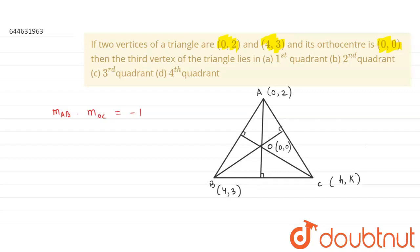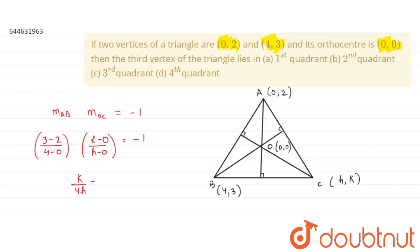Slope of AB using the formula (Y2 − Y1)/(X2 − X1) is (3 − 2)/(4 − 0). Slope of OC is (K − 0)/(H − 0). So their product equals −1, giving us: (1/4) × (K/H) = −1, which simplifies to K/(4H) = −1. From this we can say that K and H will have opposite signs: if K is positive then H is negative, and if H is positive then K will be negative.